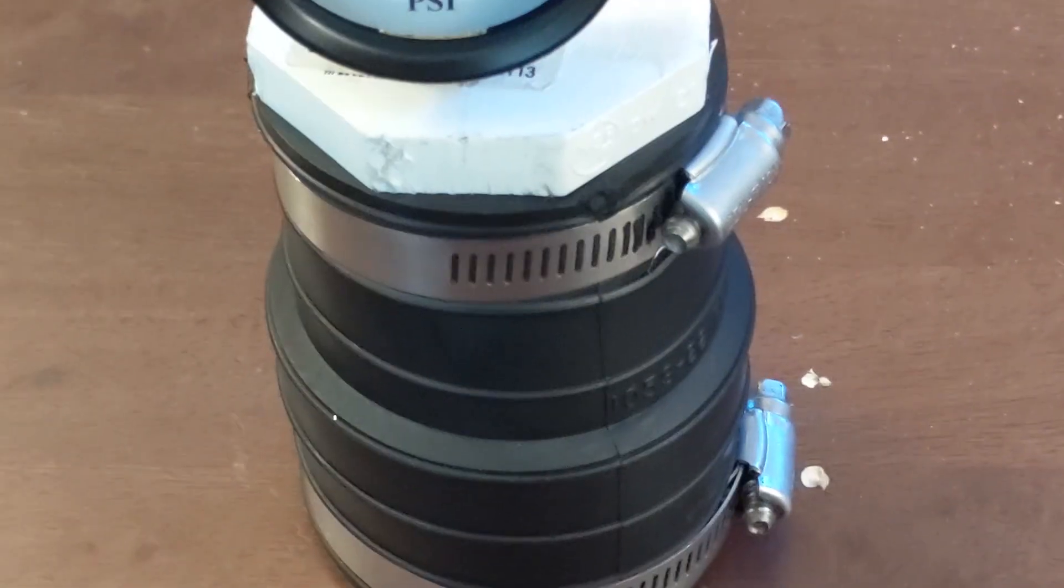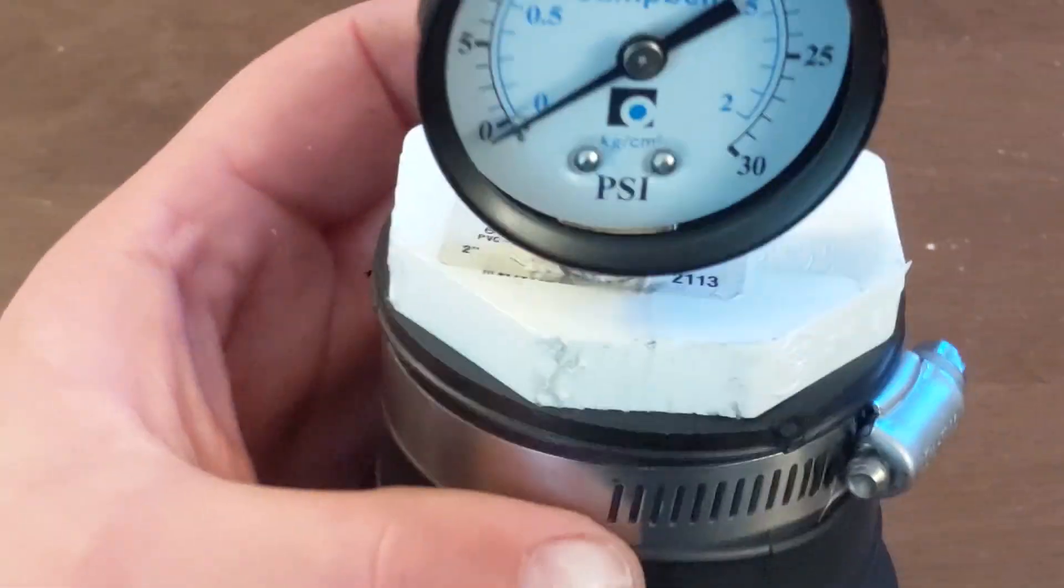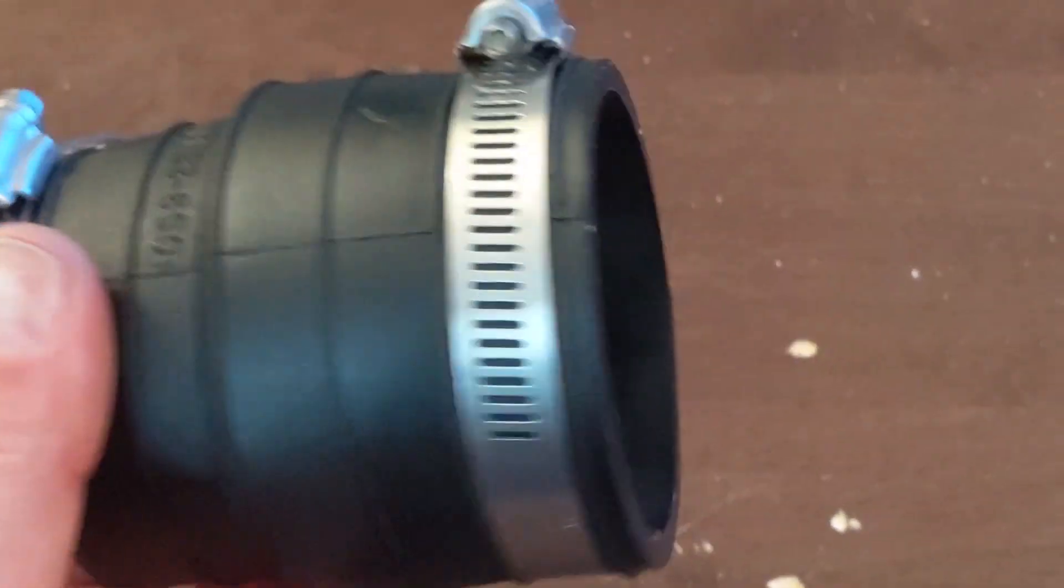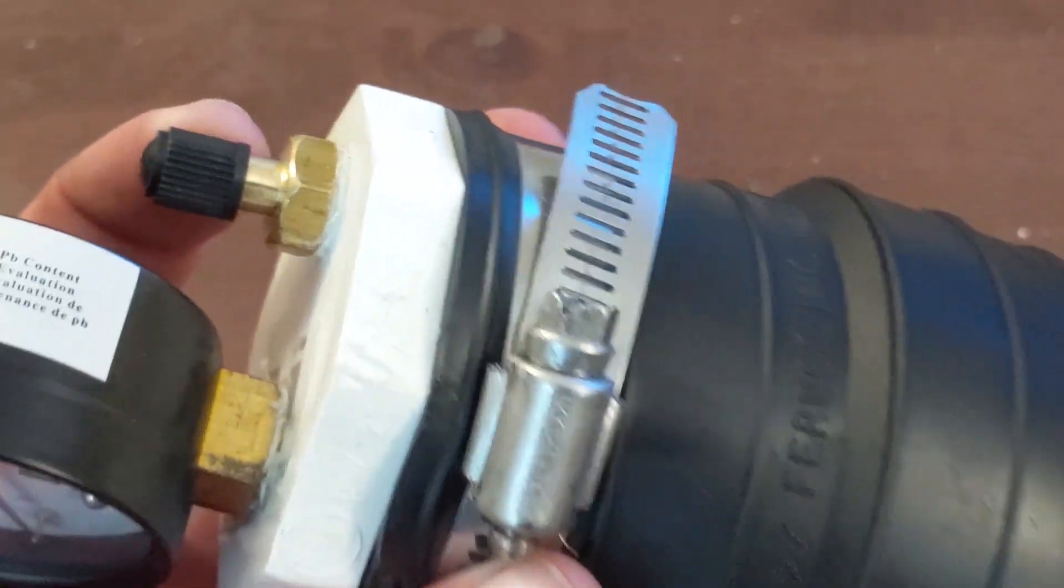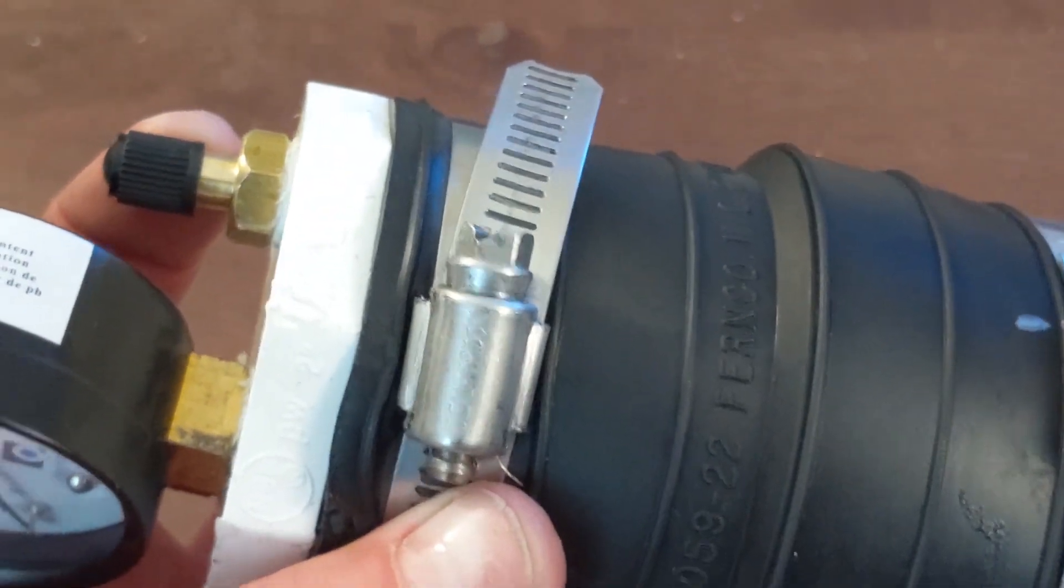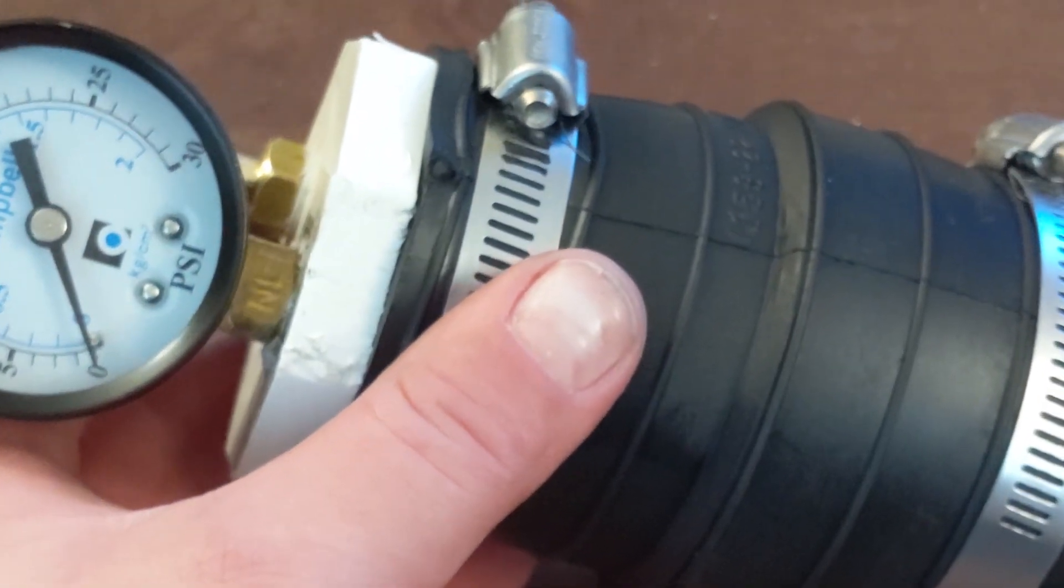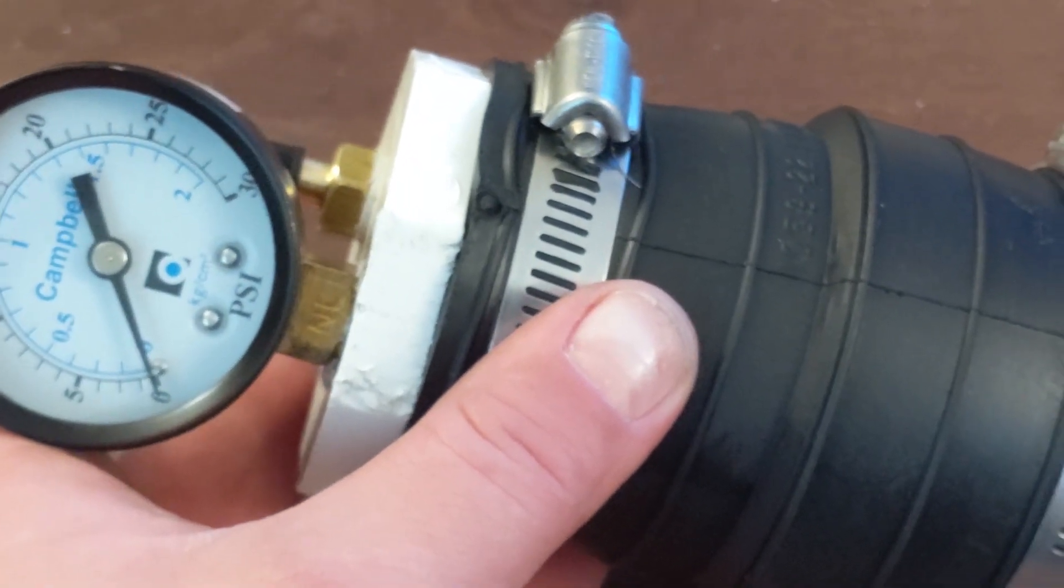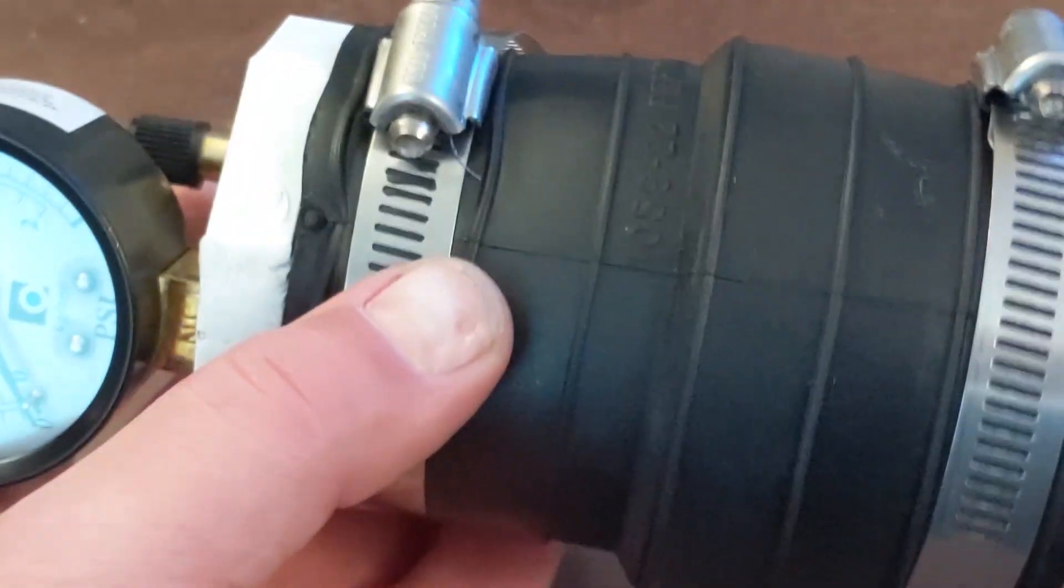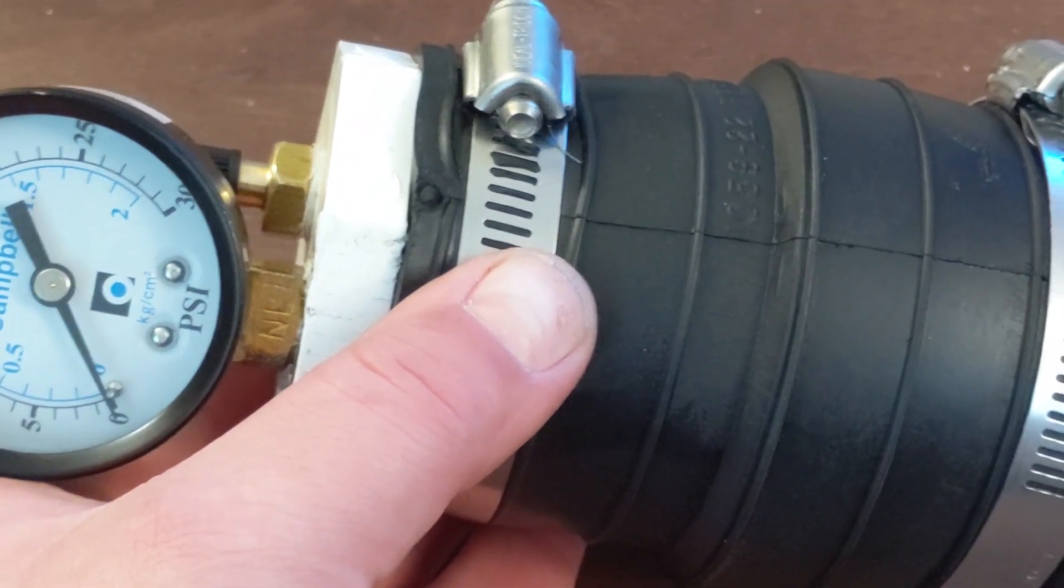All right guys, after tightening down your clamp you are all set. Now all you do is you take your intake off your car and you slide this puppy over the turbo compressor inlet. Unscrew your little cap here, get yourself your air tank, your air compressor, whatever you're using. You fill it up about three to five pounds above what your target boost level is. So if you're aiming for 15 PSI, pump 18 into the tester here.